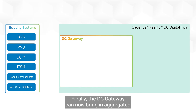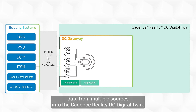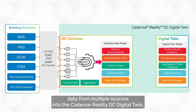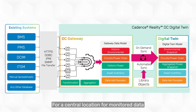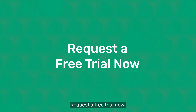We have extended the power and data network connectivity information. Finally, the DC Gateway can now bring in aggregated data from multiple sources into the Cadence Reality DC Digital Twin, for a central location for monitored data from disparate systems. Request a free trial now!